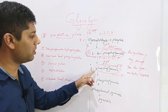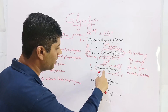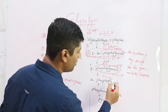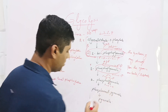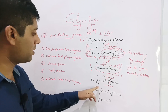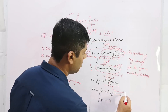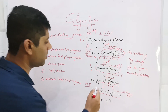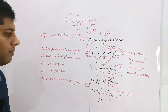The next step is isomerization, in which 3-phosphoglycerate is converted into 2-phosphoglycerate — the phosphate group shifts from carbon number three to carbon number two. The following step is dehydration, in which a water molecule is removed from 2-phosphoglycerate, converting it into phosphoenolpyruvate (PEP).